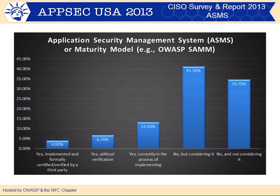We also asked whether people have an application security management system or maturity model benchmarking. Combining those who have it implemented, implemented without verification, and those currently working on it, that's barely 25% — meaning 75% don't have one. This was stunning to me, because if you want to write a strategy, you should know where you are so you can know where you're going. Fortunately, 40% said no but are considering it, so maybe we can move them toward adoption and inform them about OpenSAMM and other models.